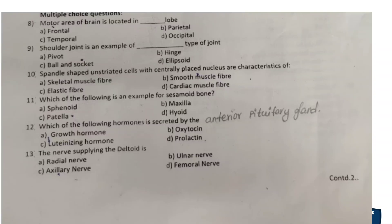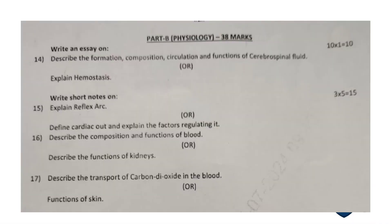Next, we move on to Part B — Physiology, for 38 marks. Write an essay on: describe the formation, composition, circulation, and functions of cerebrospinal fluid, OR explain hemostasis.